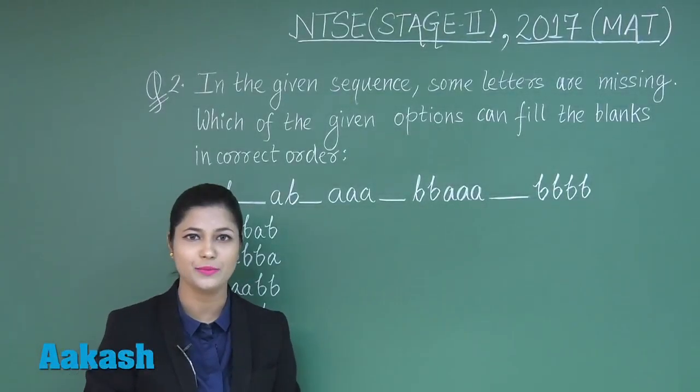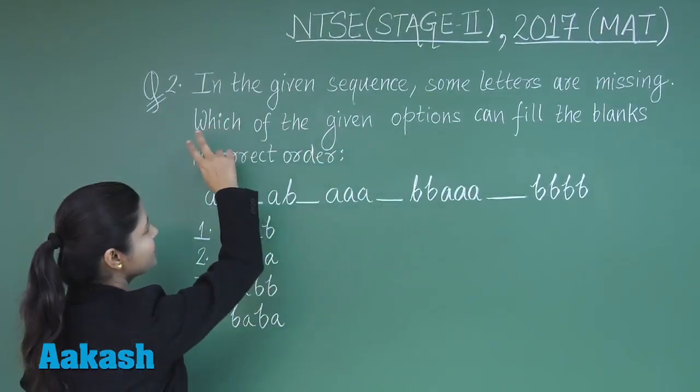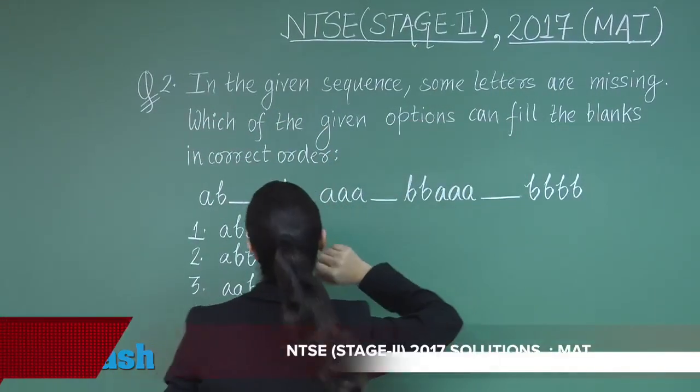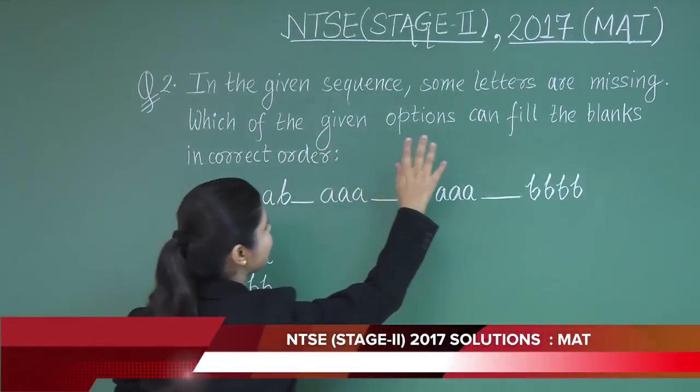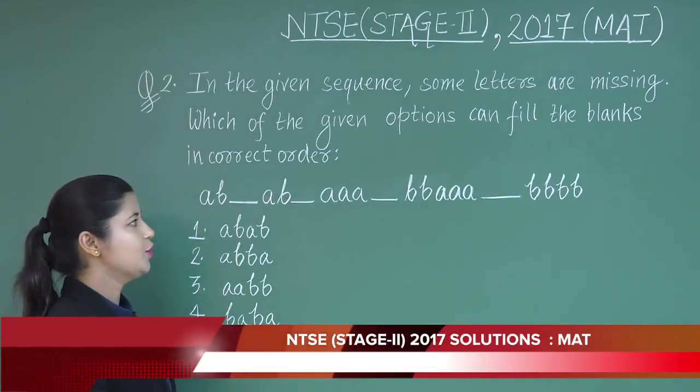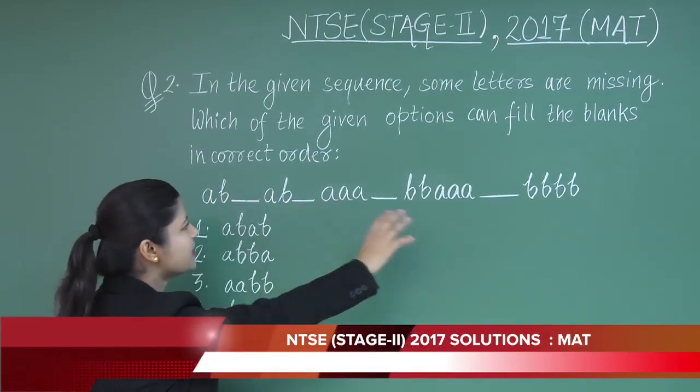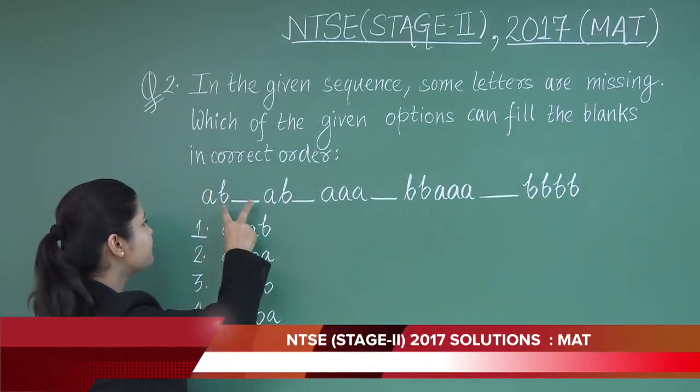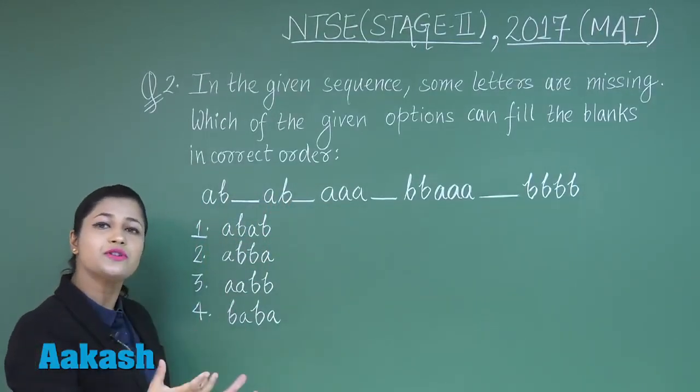Now students, let us discuss question number two. Question number two states: In the given sequence, some letters are missing. Which of the following options can fill the blanks in correct order? So in this question, you can see a sequence with blank spaces here.